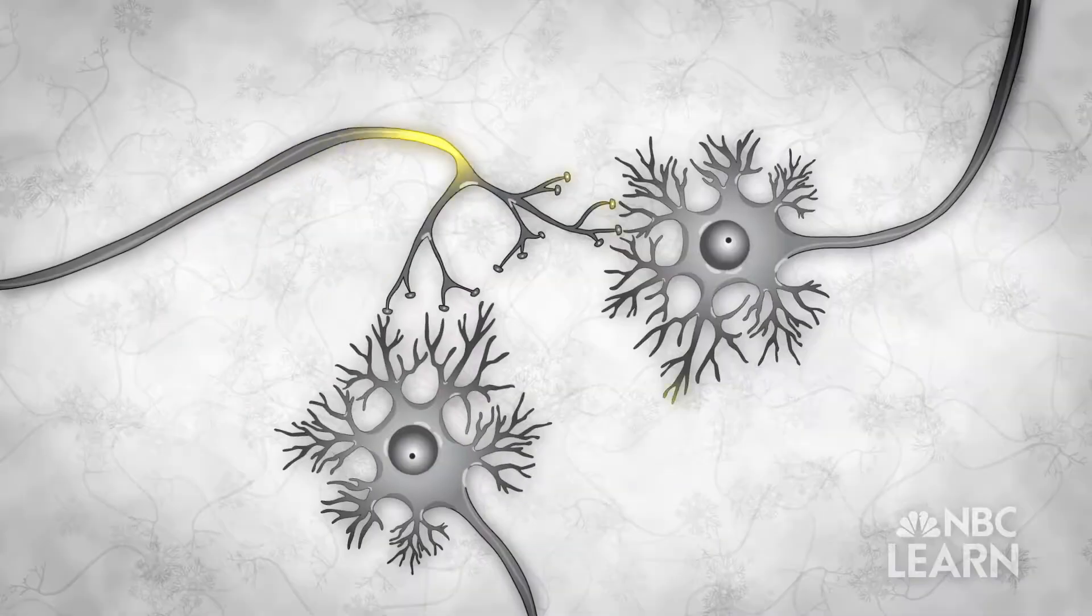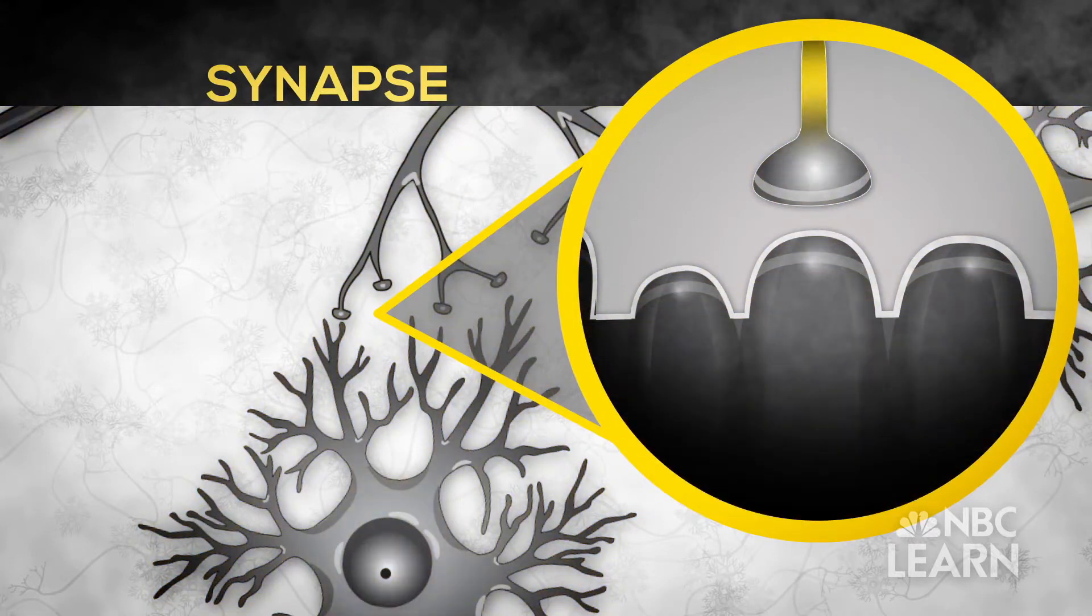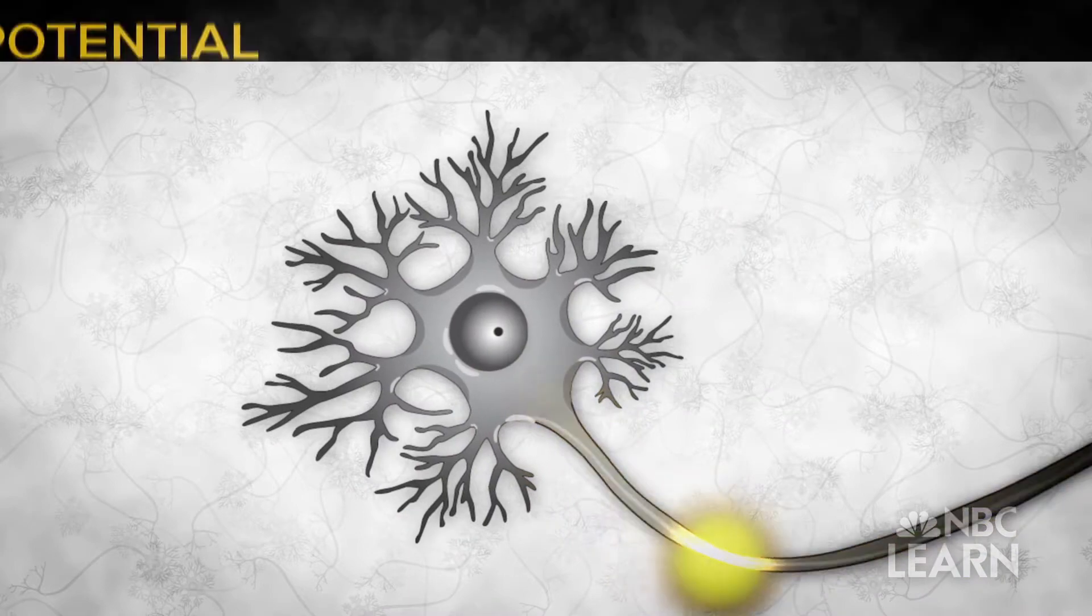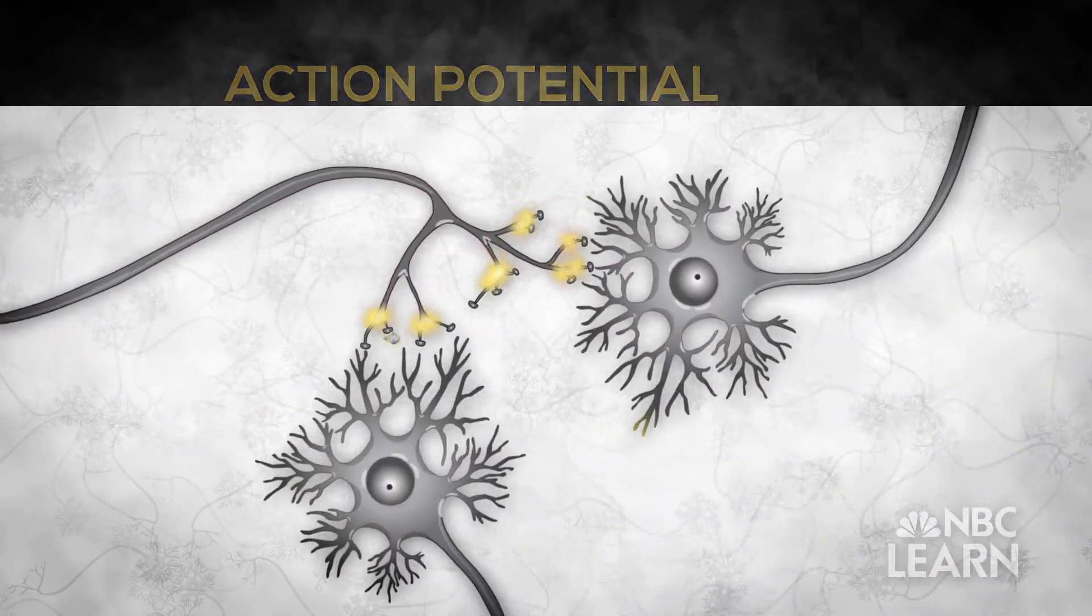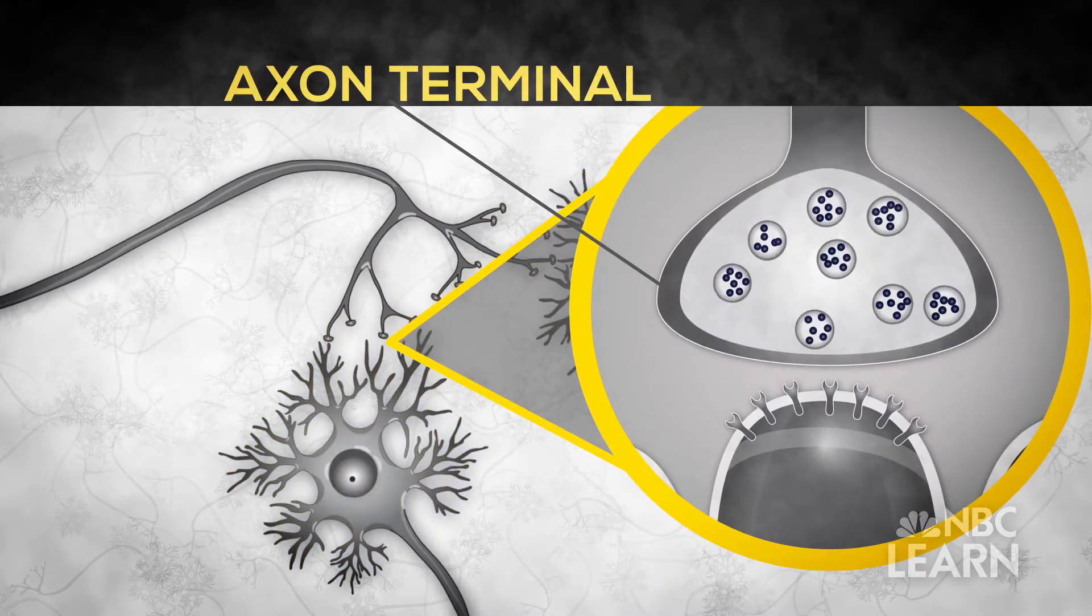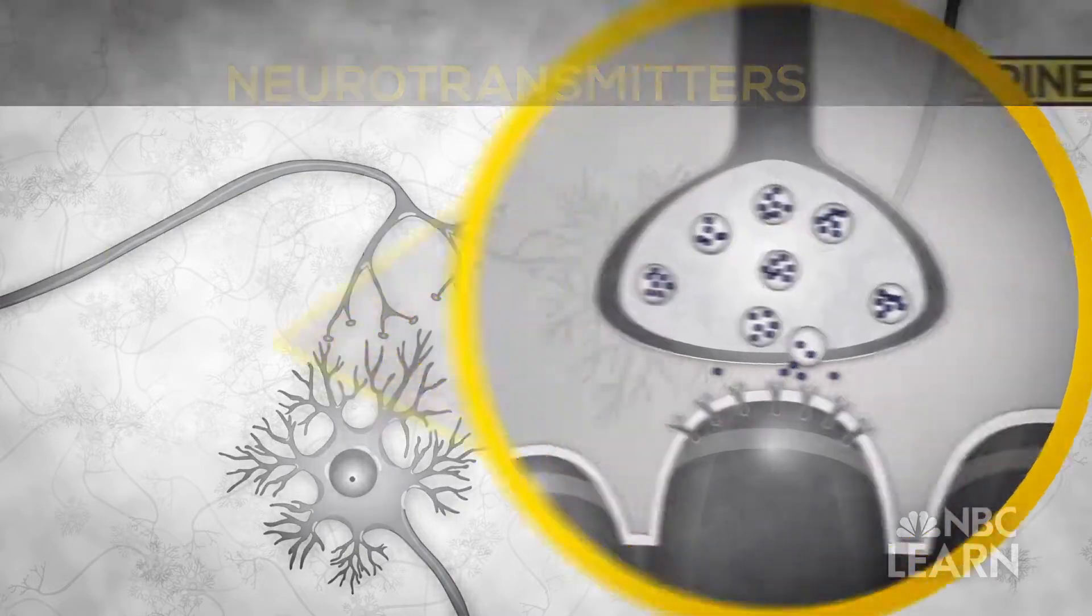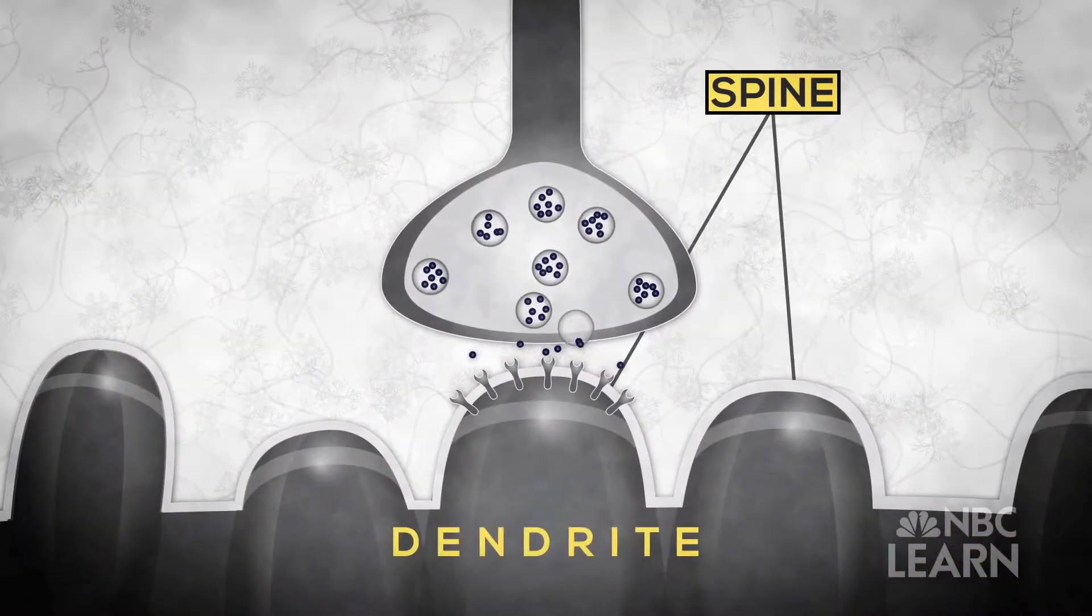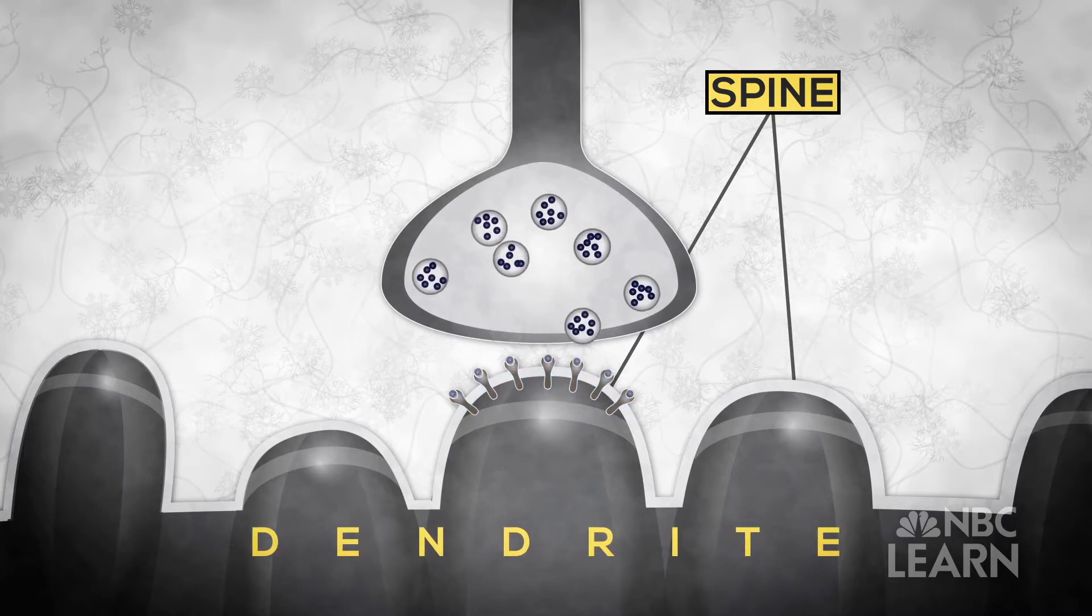begin to get the picture of the web being built. Neurons communicate with each other through a junction called a synapse, where information signals are transmitted and received. An electrical signal called an action potential travels down the axon of the talking neuron until it reaches the axon terminal, releasing chemical neurotransmitters into a minuscule gap. Spines on the dendrites of the listening neuron have special protein receptors that bind with the neurotransmitters. This complex messaging sequence is repeated